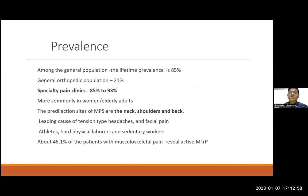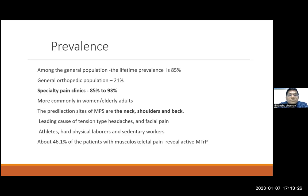The lifetime prevalence of this condition is 85 percent, so it's a very common condition. In pain clinics, 21 percent of the general orthopedic population has myofascial pain, and in pain clinics prevalence can reach 85 to 93 percent. It is most commonly found in women and elderly adults. The commonly affected sites are the neck, shoulders, and back. It is a leading cause of tension-type headaches and facial pain.